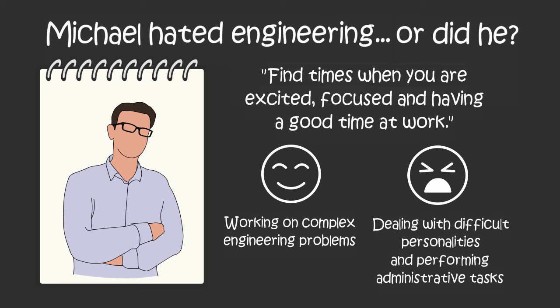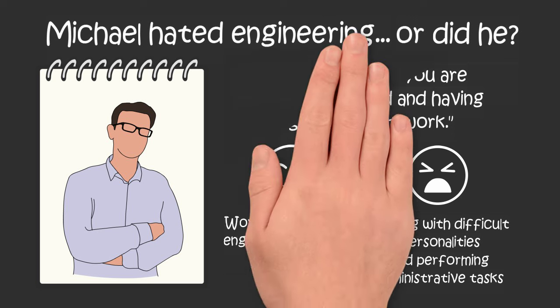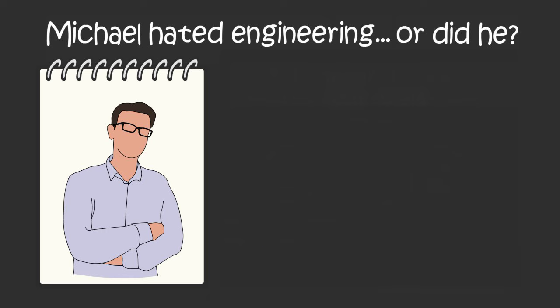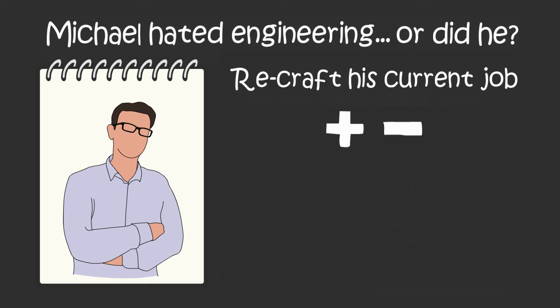By simply discovering when he was enjoying himself at work and what caused his energies to rise and fall, Michael discovered that he had actually enjoyed civil engineering. It was the people stuff, the proposal writing, and the fee negotiations that he hated. He just had to find a way to craft his job so that he was doing more of what he loved and less of what he hated.